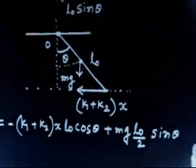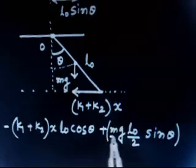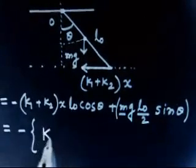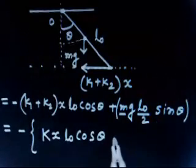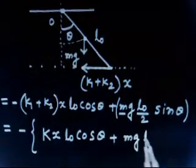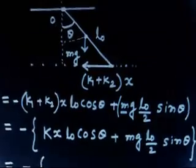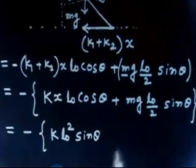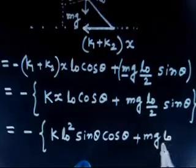This torque of Mg is also decreasing θ, so it is also negative. Taking minus as common, with K1 + K2 = K, the total torque is: −[K·x·L₀ cos θ + Mg·(L₀/2)·sin θ]. Plugging in x = L₀ sin θ, this becomes −[K·L₀² sin θ cos θ + Mg·(L₀/2)·sin θ].